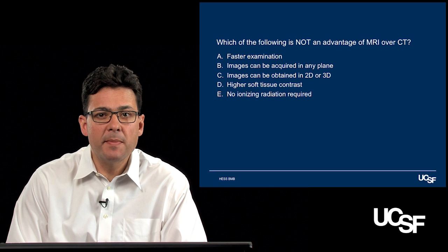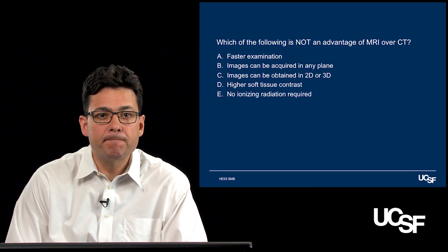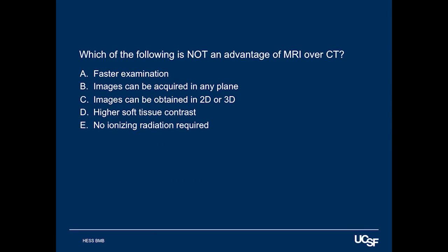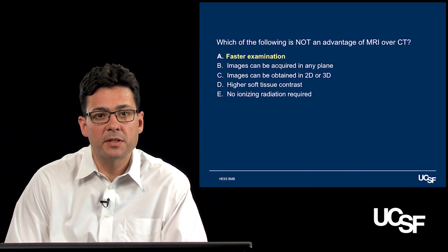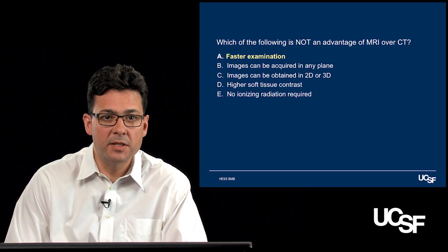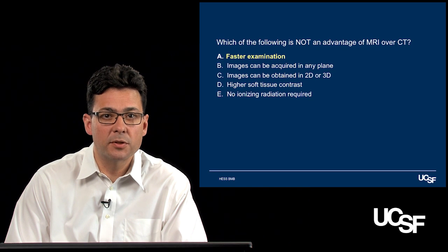Now that you know a little about CT and MRI, let's ask a question: which of the following is not an advantage of MRI over CT? The answer is A — MRI is not a faster examination. CT, as we discussed, is a much faster examination and is therefore better suited to imaging patients with emergent circumstances.